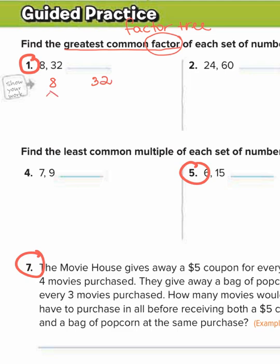A factor tree is where we break up the number by its factors until we get all prime numbers. For example, 8 can be broken up into 4 times 2. 2 is prime, so I'm going to circle that. 4 is not prime, so we have to keep going. 4 can be broken up as 2 times 2. I'll bring down this 2 so everything's at the bottom. Now that's all prime numbers, so 8 is done.